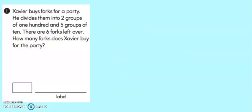Let's start with the first problem. Xavier buys forks for a party. He divides them into two groups of 100 and five groups of 10. There are six forks left over. How many forks does Xavier buy for the party?